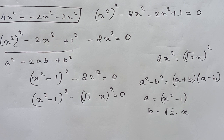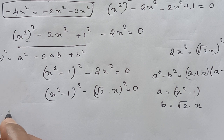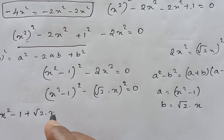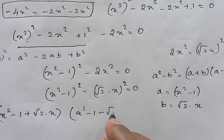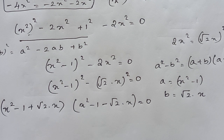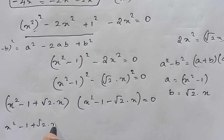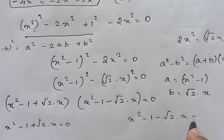Now we can expand this. So: (x squared minus 1 plus √2 times x) times (x squared minus 1 minus √2 times x) equals 0. Now we can take two separate equations: x squared plus √2 x minus 1 equals 0, and x squared minus √2 x minus 1 equals 0.